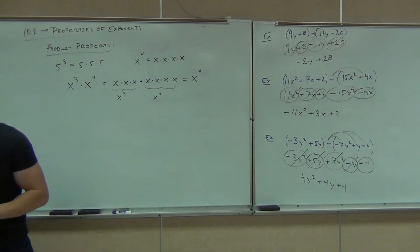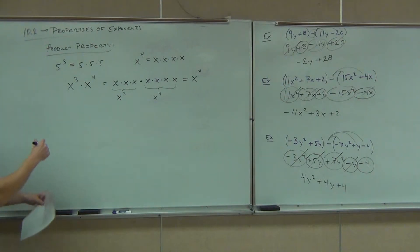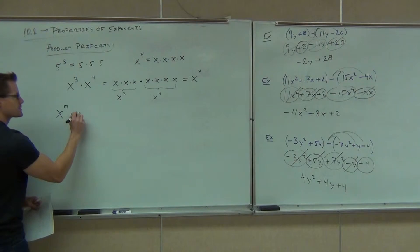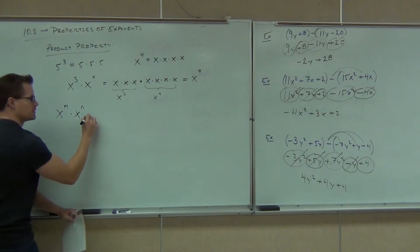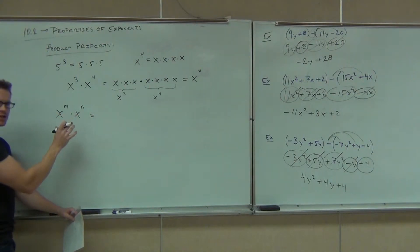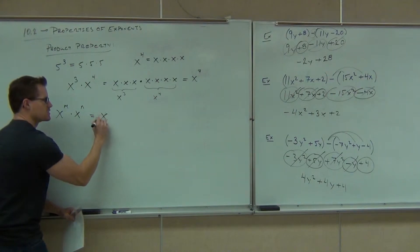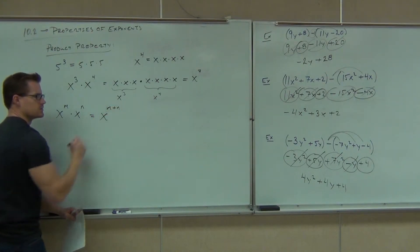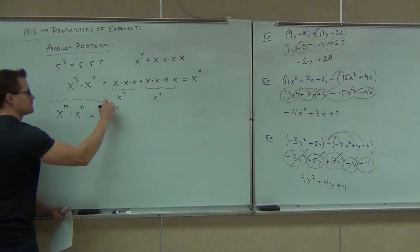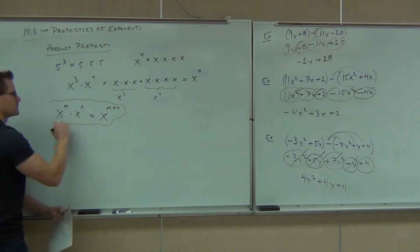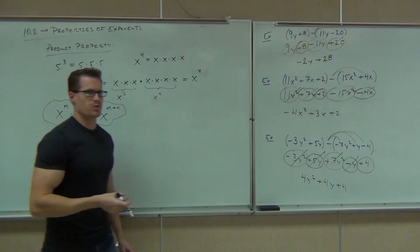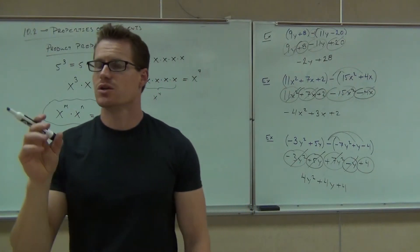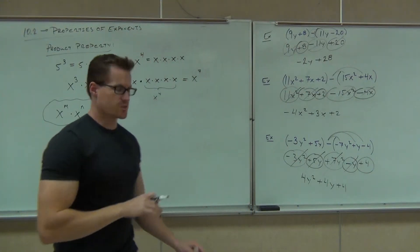So the product property says, to be general: if you have x to the m times x to the n, in order to combine them, you get x to the m plus n. That right there is your product property. It says if you're multiplying common bases together — x's times x's — you simply add those exponents.